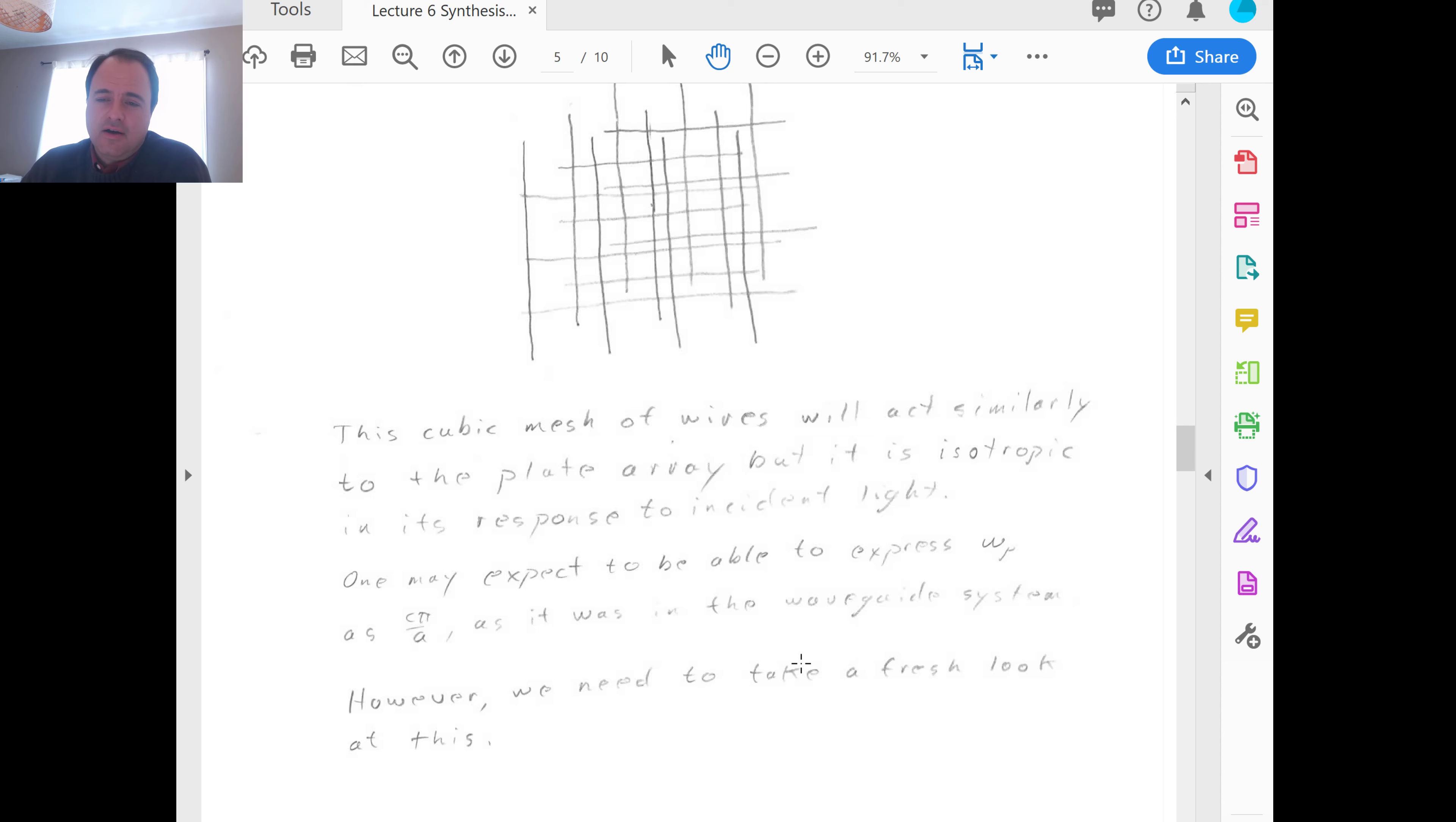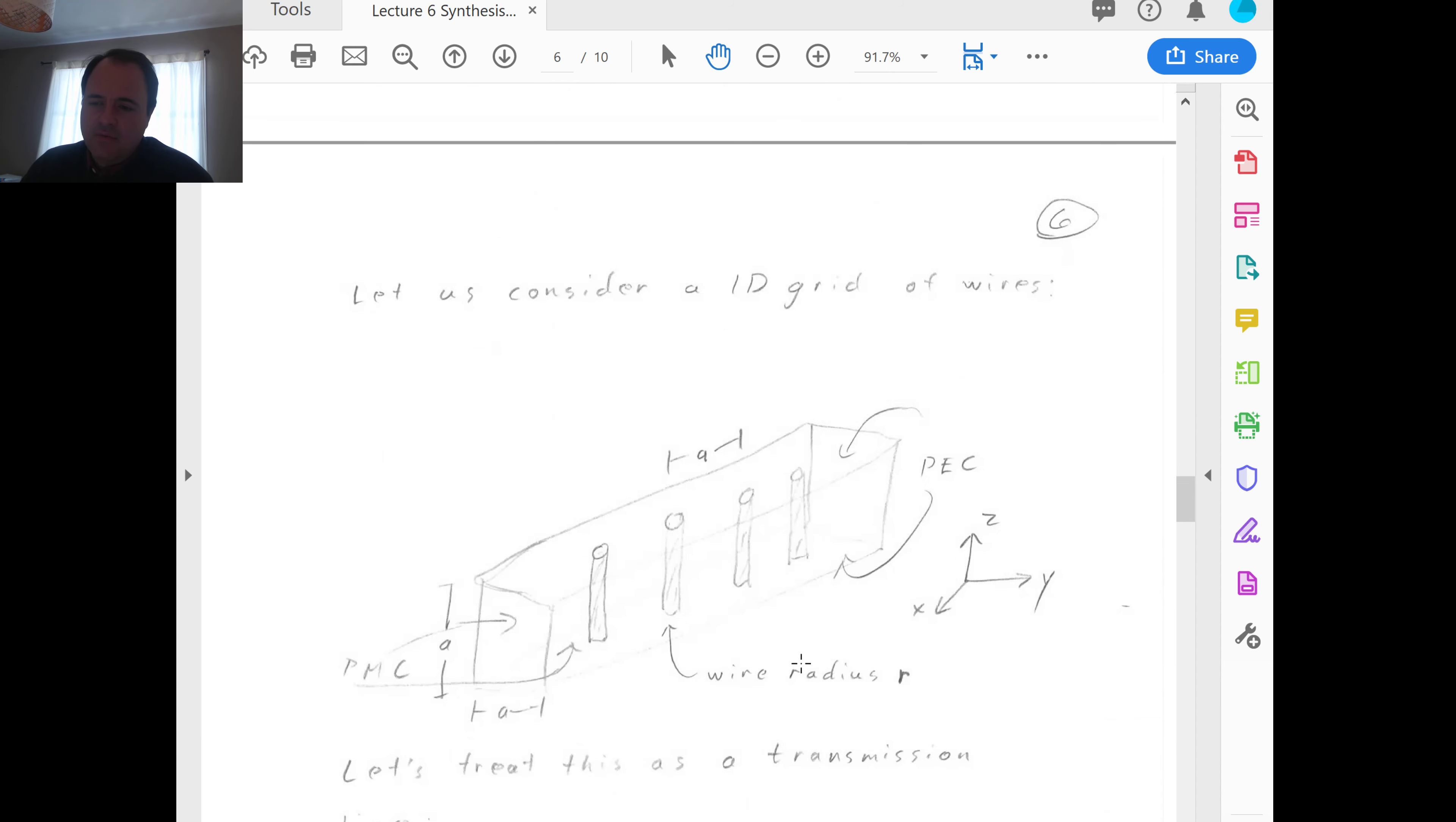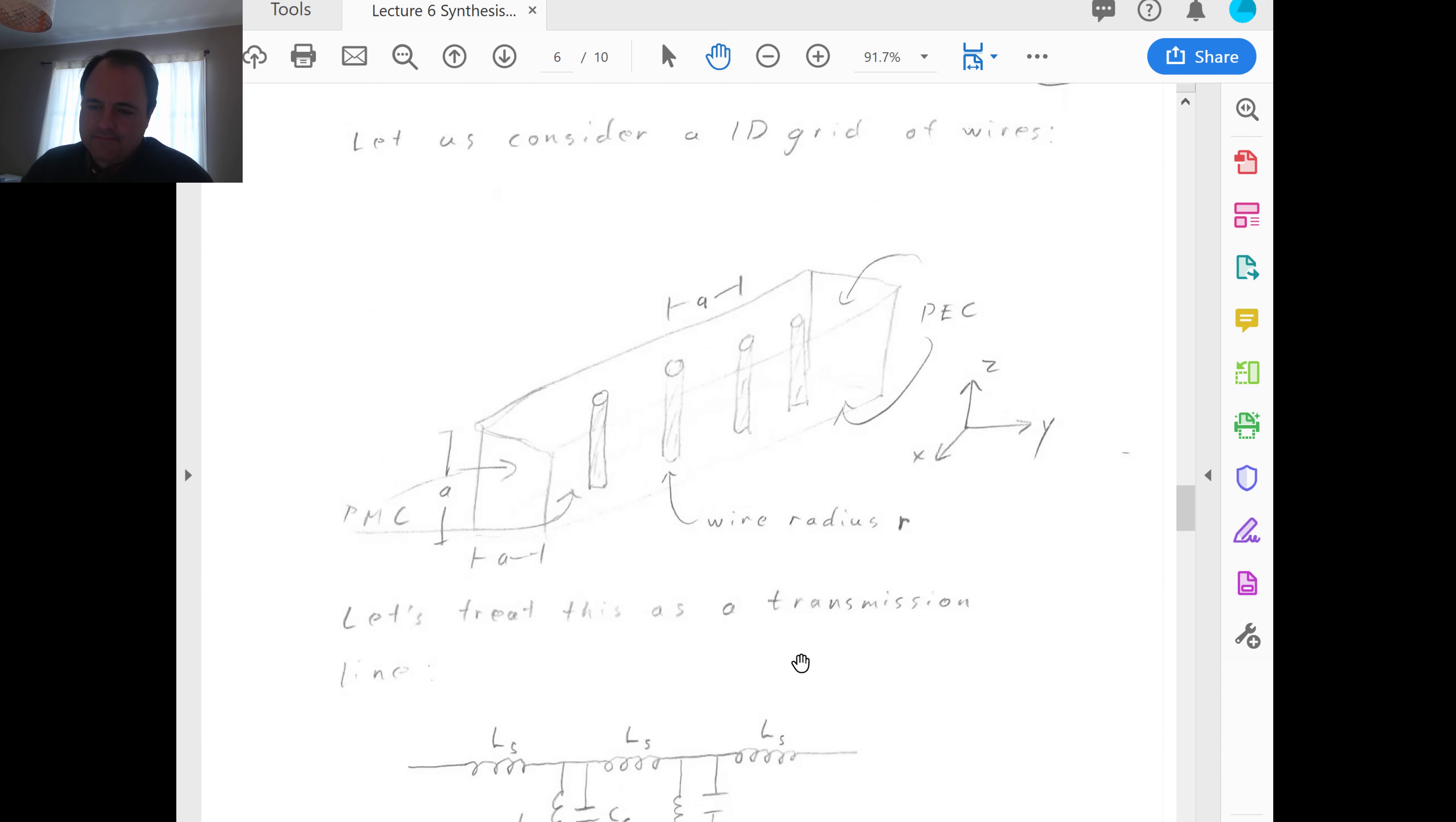So, wire media. Now we can take this concept to its penultimate conclusion. Next and that last step. The 3D wire mesh grid. This cubic mesh of wires. So, now we basically get rid of the walls of the array of waveguides. And instead, only put in a wire grid. So, we're basically taking a lot of the metal away. Does this affect the optical performance? Yeah, in some ways, but it keeps the important aspect of negative epsilon for a wide frequency range. So, this cubic mesh of wires will act similarly to the plate array, but it is isotropic in its response to incident light. So, light can come in from all different angles, and the grid will have the same optical properties. That's what isotropic means.